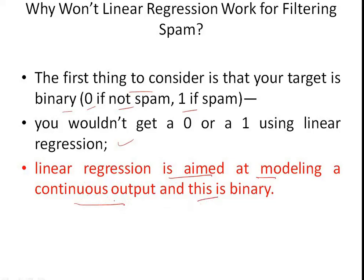The output of linear regression is a continuous value, but here the output is binary. In regression, the dependent and independent variables are in terms of continuous values, but here we have binary values. That is why the linear regression algorithm won't work for spam filtering.